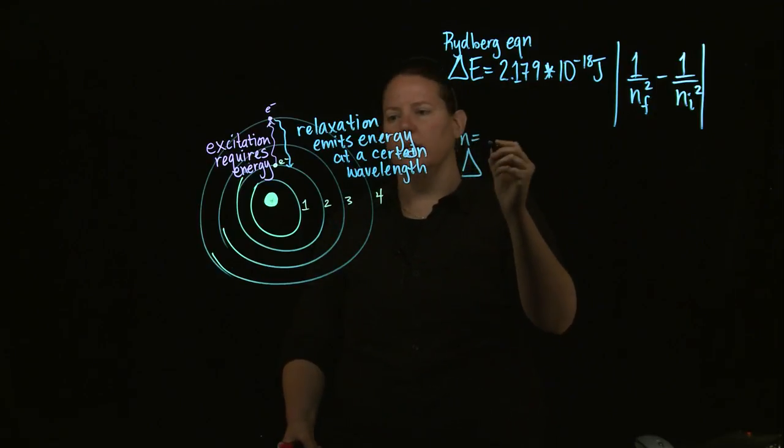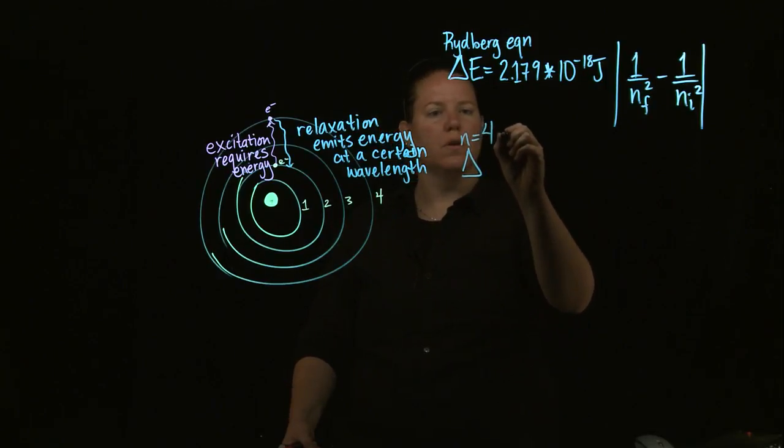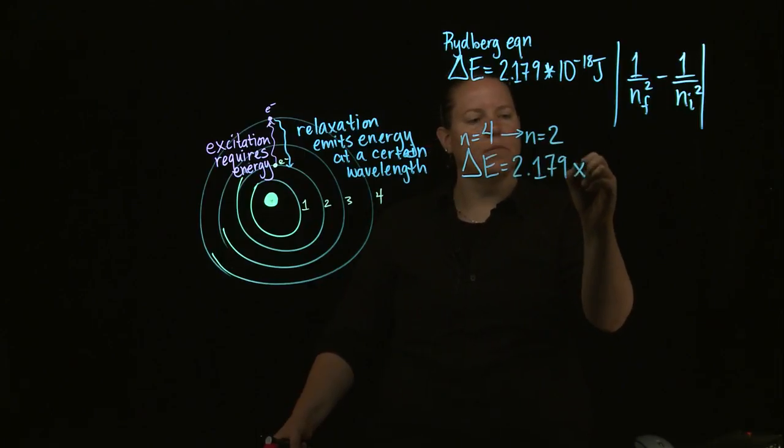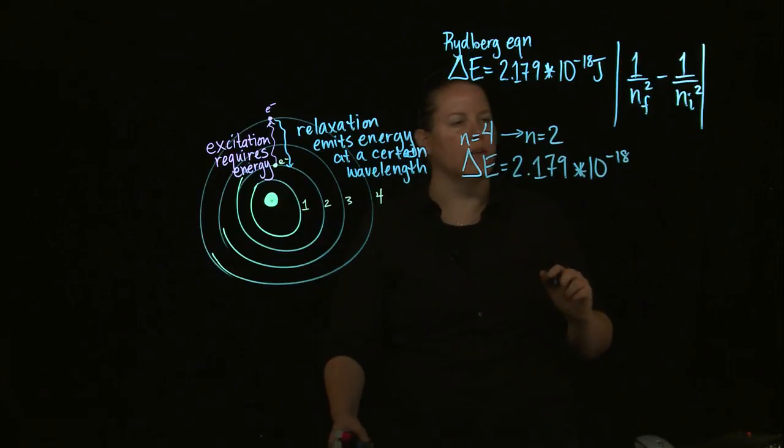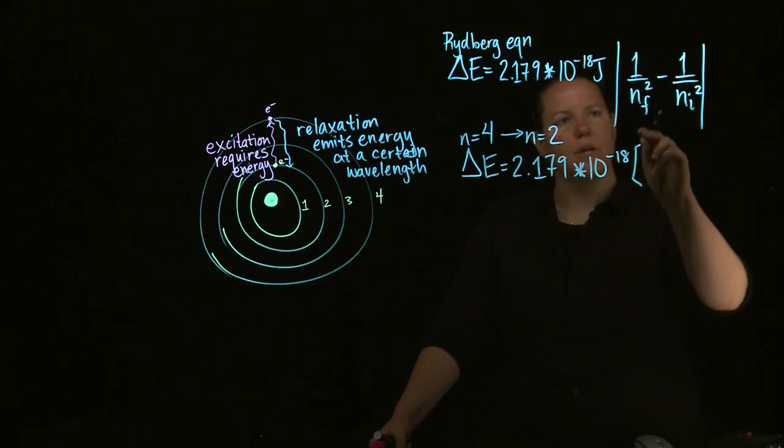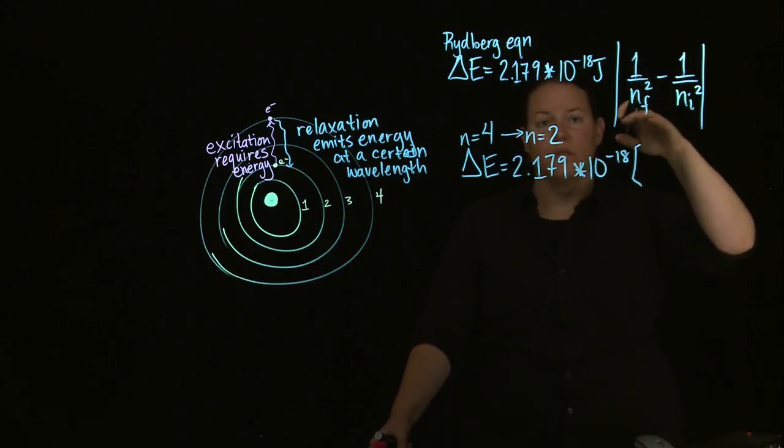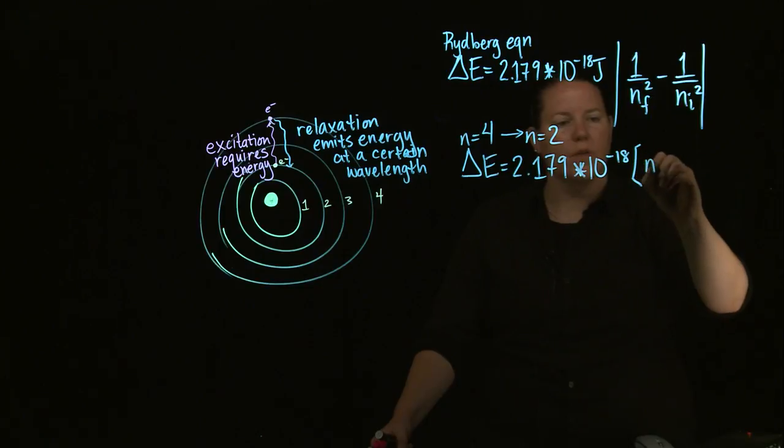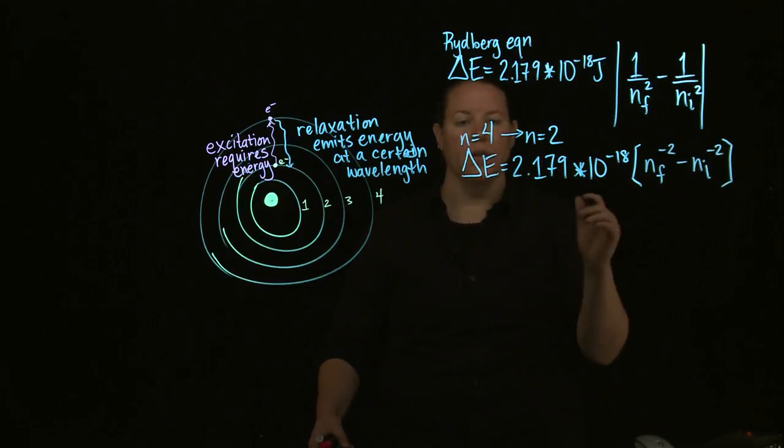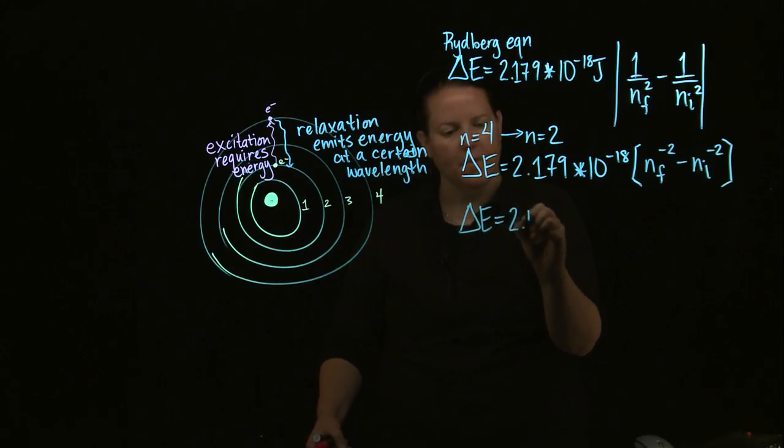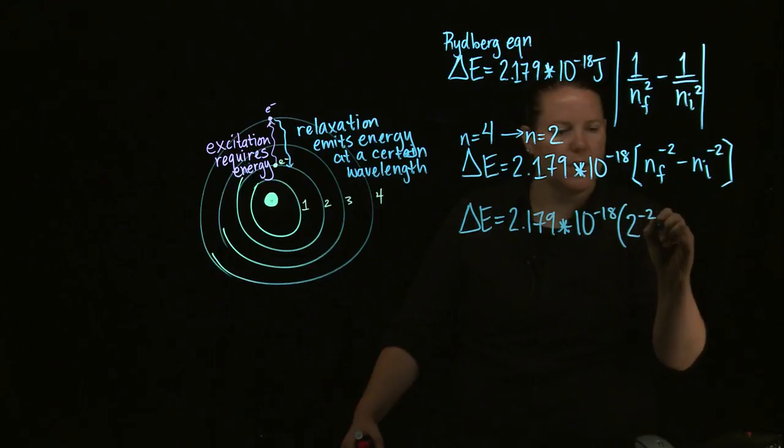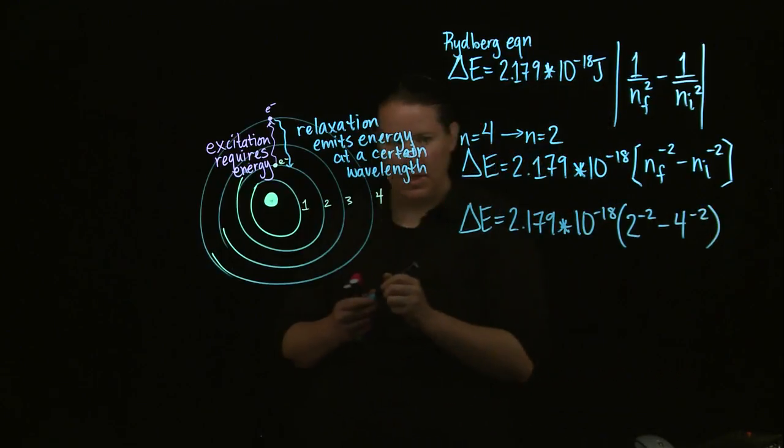Okay, so let's find, let's say that our n equals 4, it goes from n equals 4 to n equals 2, just like I drew over here. My delta E value is going to be 2.179 times 10 to the negative 18th. In order to calculate this a little bit more easily, I tend to rewrite this equation, because anything that is in the denominator that's to a power could become a negative power in the numerator. This is a heck of a lot easier to put into your calculator. So, let's actually plug in numbers here.